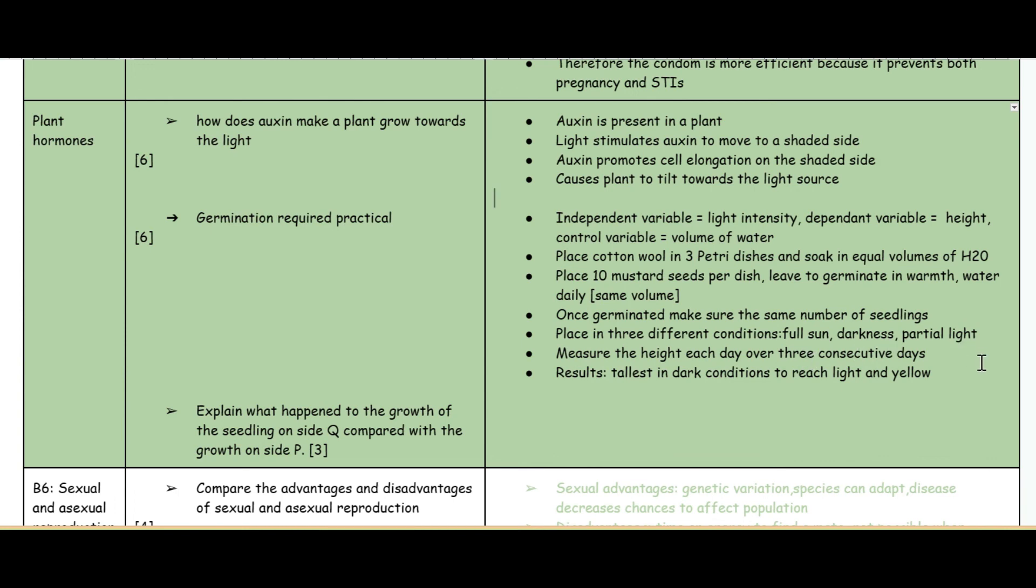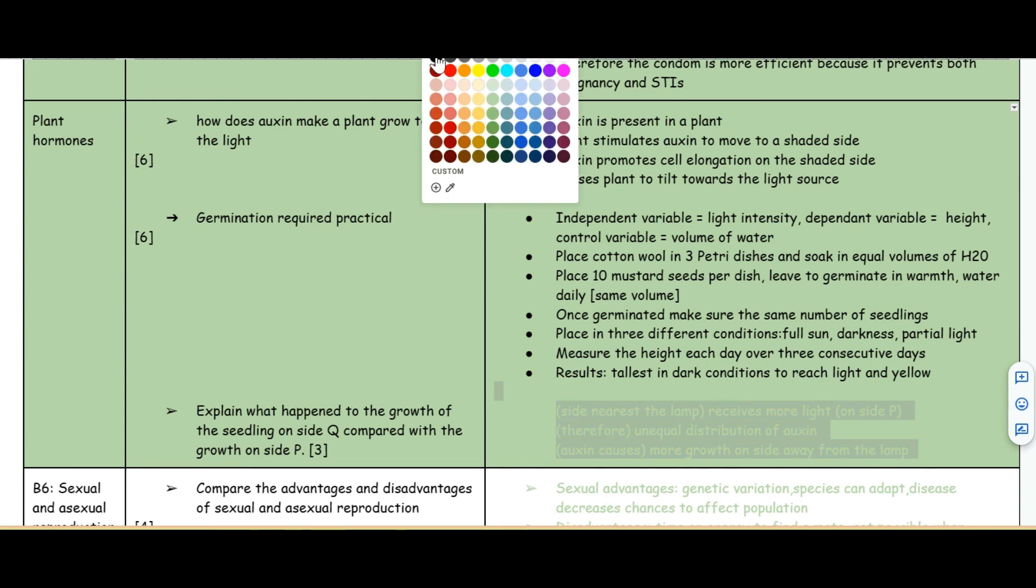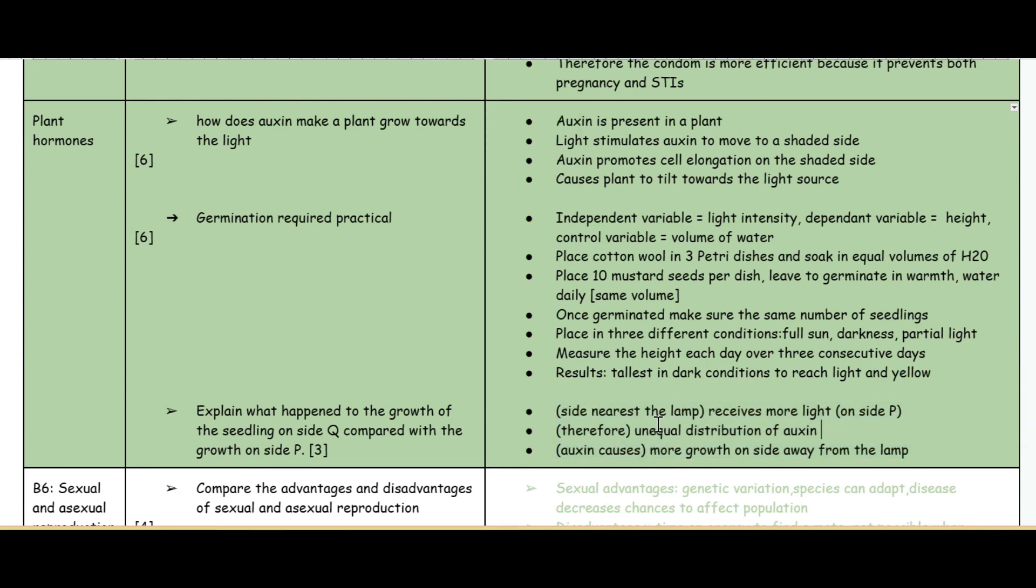You're then going to place it in three different conditions: full sunshine, darkness, and partial light. You're then going to measure the height each day over three consecutive days. You're going to realize that in the darkest conditions it will be tallest but you will see that it's not green because there's no chloroplast, so it's going to be yellowish. It's going to be shortest in the sunny conditions. The final question: explain what happens to the growth of the seedling. The side nearest to the lamp would receive more light and therefore there's going to be an unequal distribution of auxin, and auxin will cause more growth on the side that's away from the lamp.